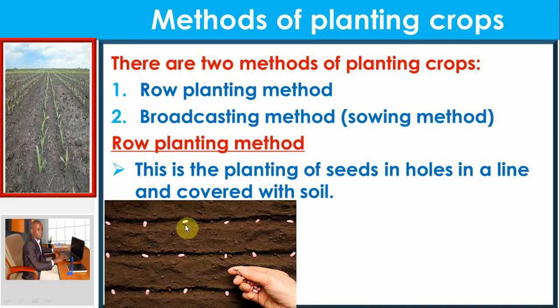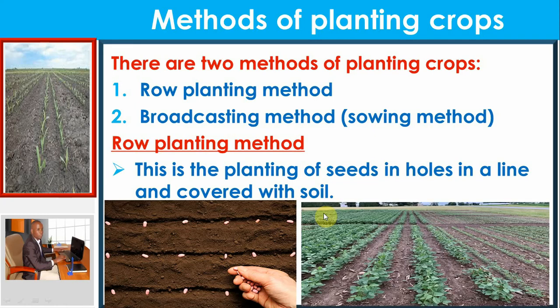Just like in this diagram, seeds are being planted in lines. They created holes and are putting seeds into them — this is one line, this is another line. After planting like this, you cover the seeds for them to germinate. When they grow up, they look very nice in the garden — you can see how beautiful it looks when you use row planting.